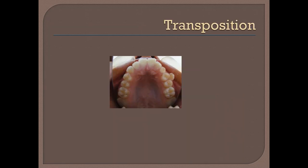Transposition is another problem contributing to features of malocclusion — it is the switching of places between two adjacent teeth, such as the canine and first premolar, with retained deciduous teeth. This contributes to crowding, retained deciduous teeth, possible pathology, cysts, and root resorption if not treated properly.